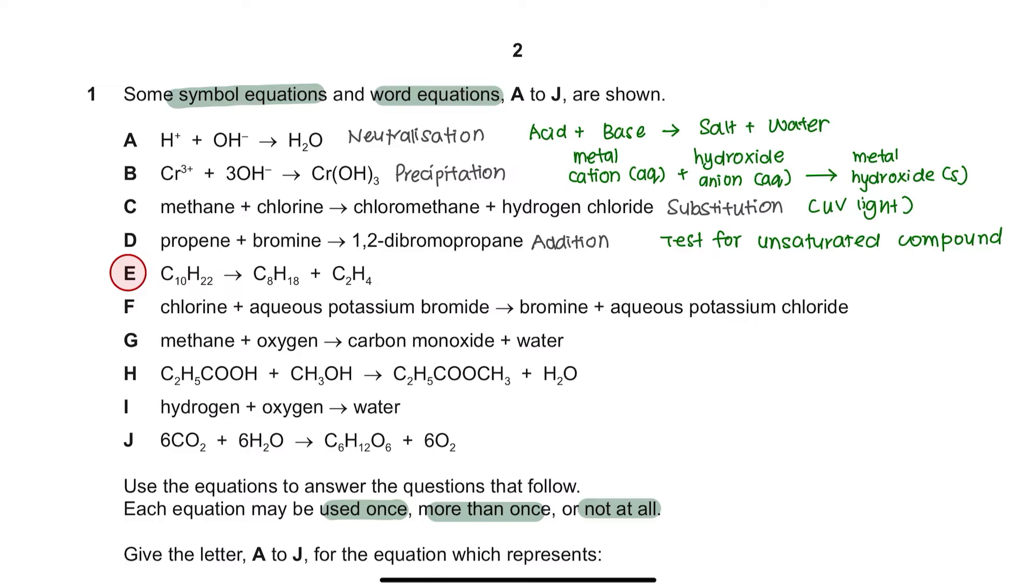Equation E. This is the breaking down of long alkane chain into smaller chain of alkanes and alkene. This is a cracking process. Equation F. We have here a more reactive halogen displacing a less reactive halide. This is called displacement.